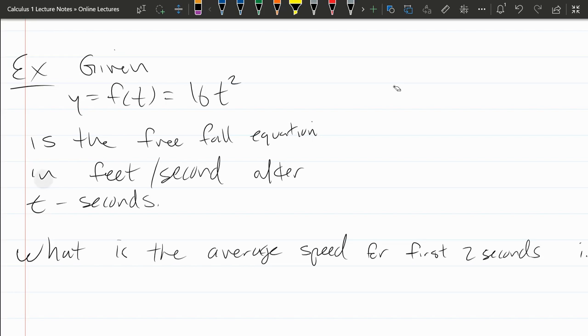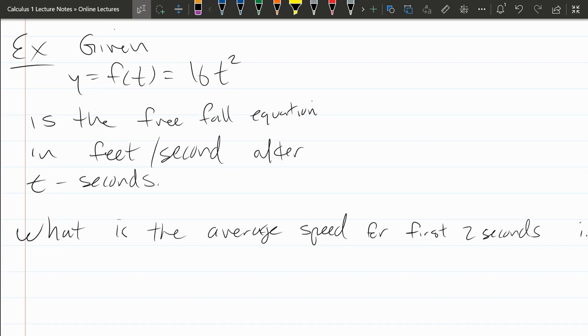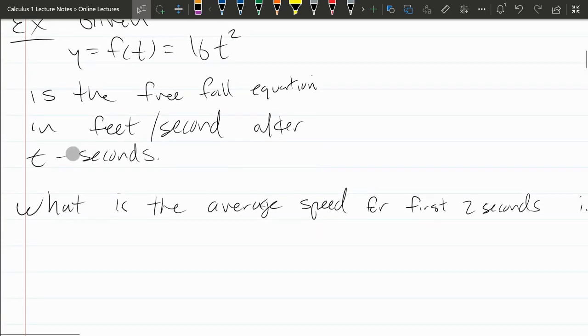This doesn't really make sense when t is negative. I want to know what's the average speed for the first two seconds, so that'll be between t equals 0 and t equals 2. So this is for t in the interval 0 comma 2. We're going to replace it with an epsilon and the epsilon means in.